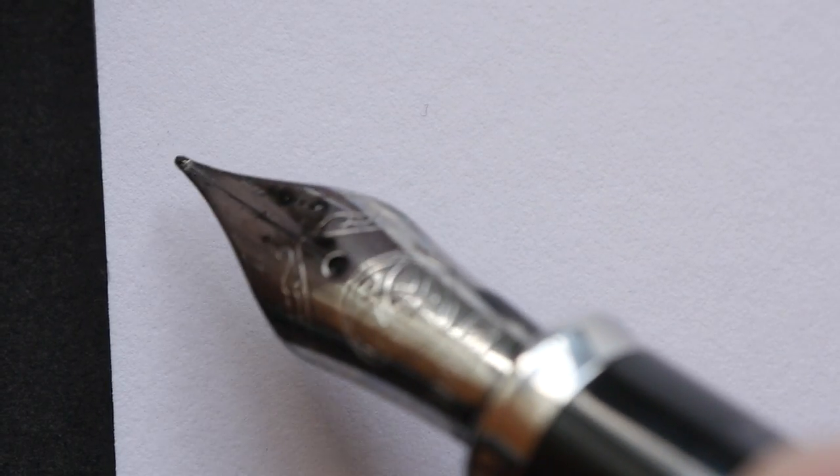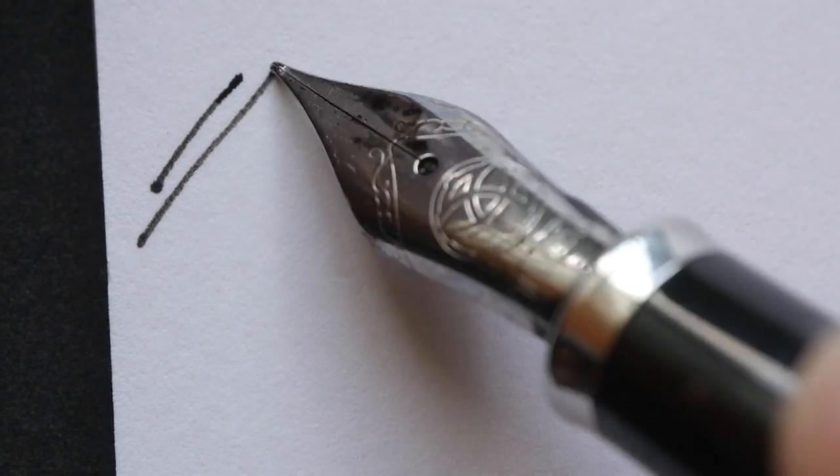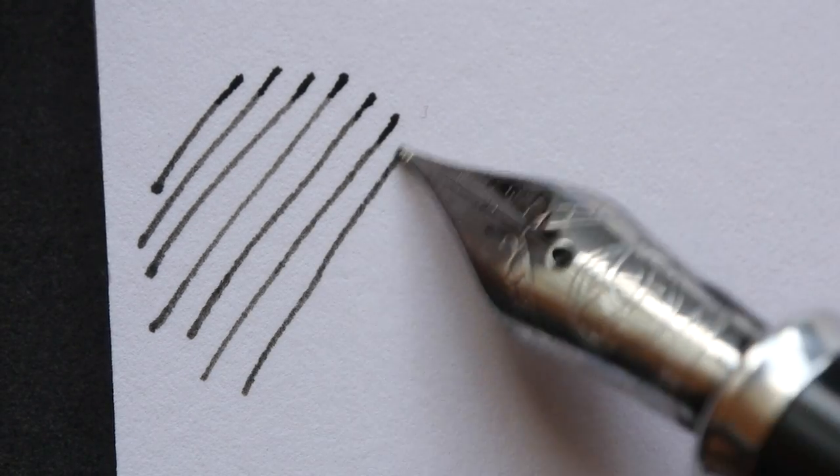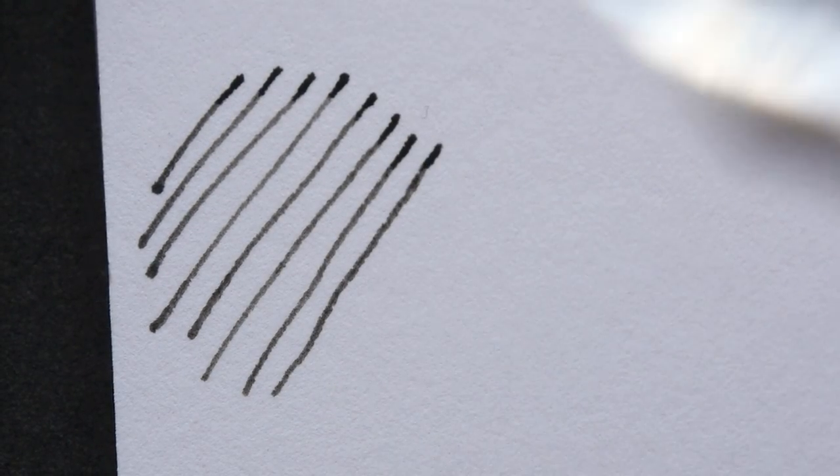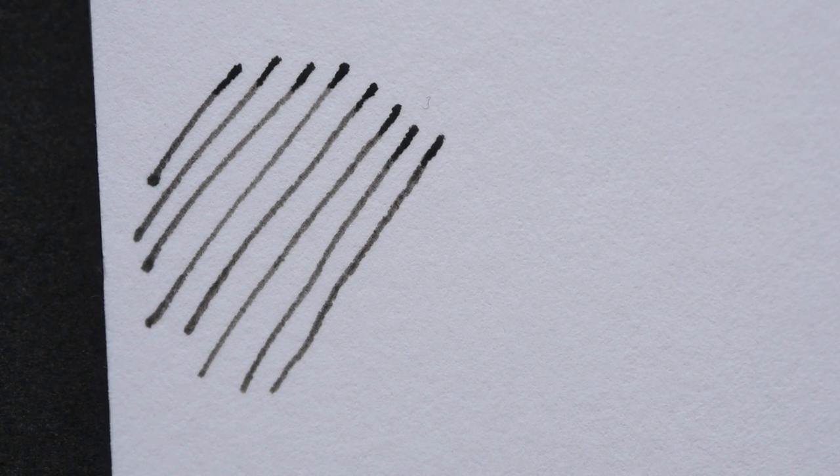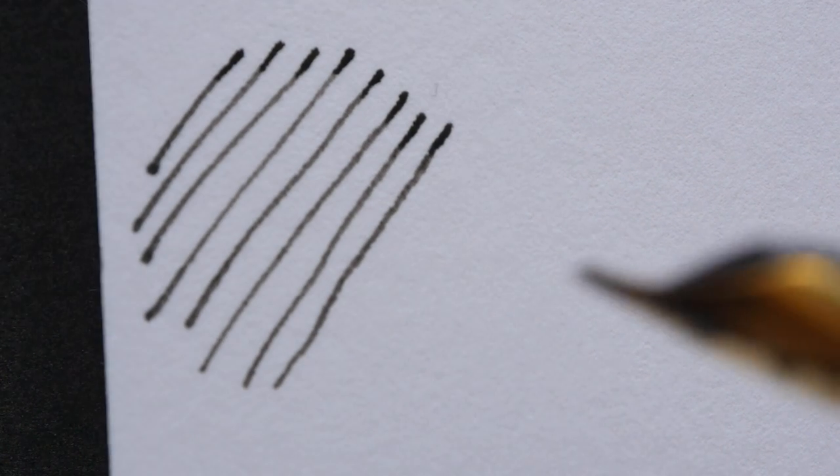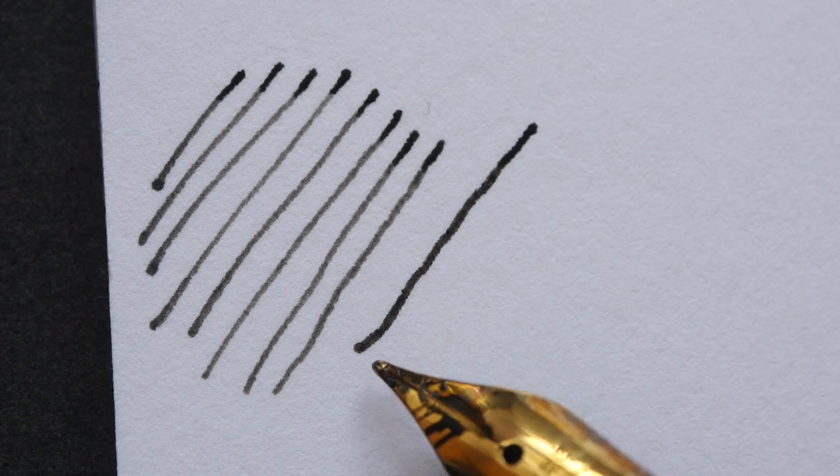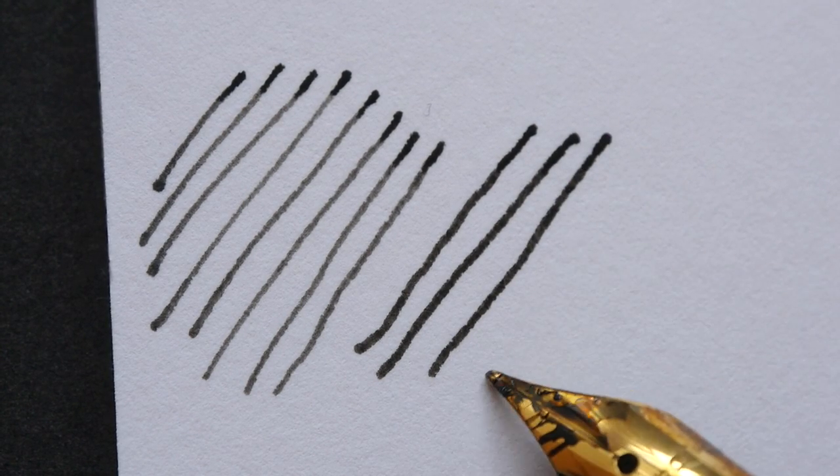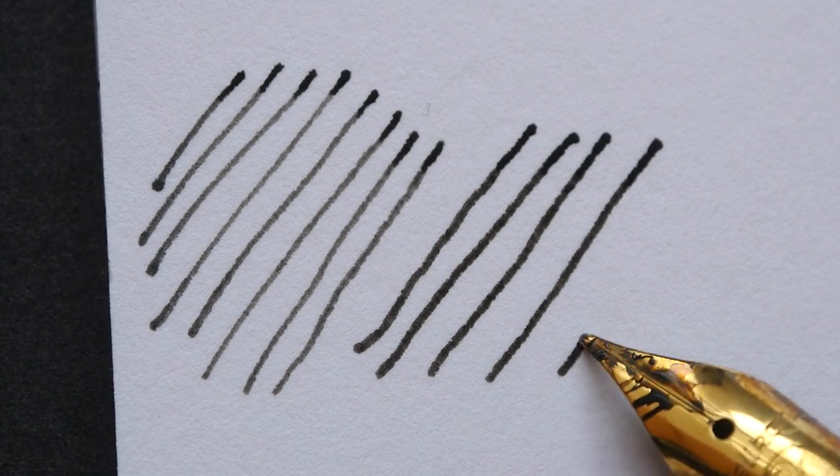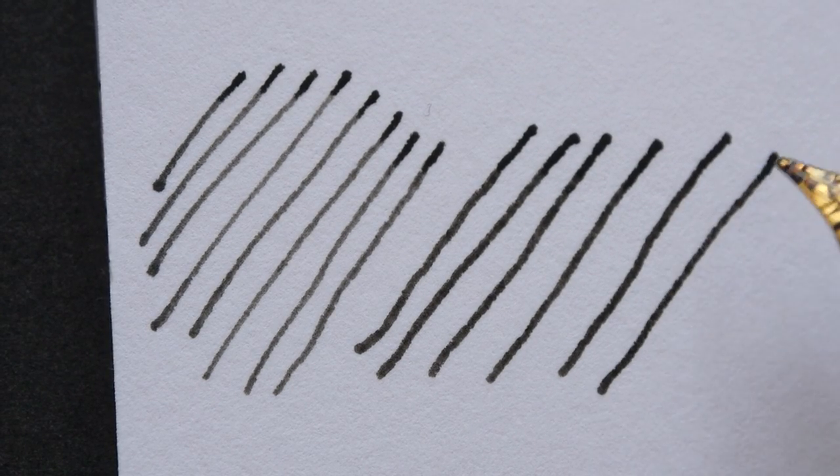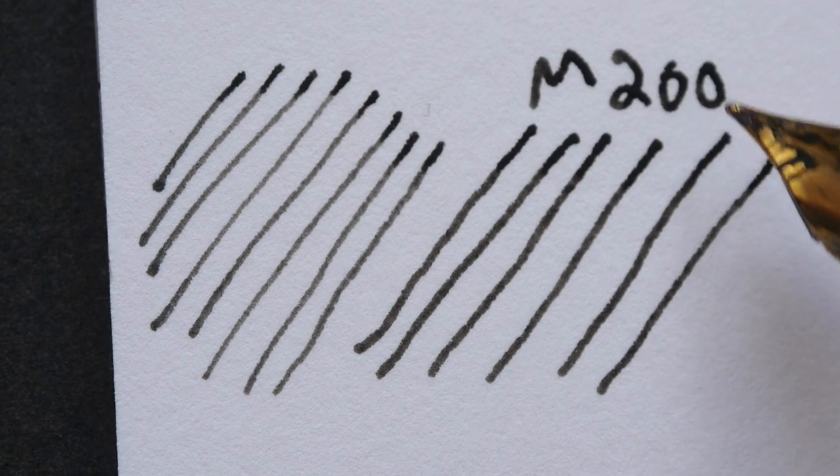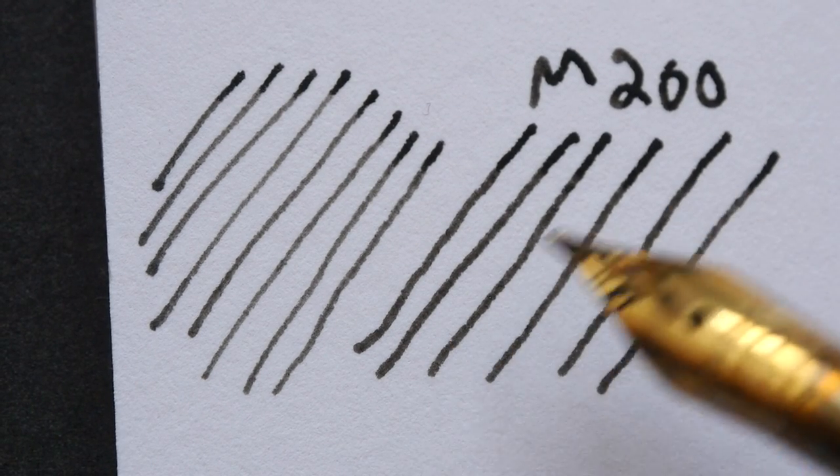Now let's compare this fine nib with the Pelican M200 fine nib that I always use. This is the Pelican M200. Both inks are Noodler's bulletproof black ink. So the fine nib on the M200 is a bit thicker and the lines are also darker.